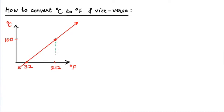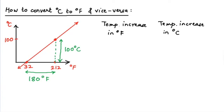If I complete the right angle triangle, the height of the triangle in degrees Celsius units is 100 degrees Celsius, and the base in degrees Fahrenheit is 212 minus 32, which is 180 degrees Fahrenheit. From the diagram, when the temperature rises from 32 to 212 degrees Fahrenheit — a rise of 180°F — the corresponding temperature increase in Celsius is 100 degrees Celsius. Because this is a straight line, the rate at which the Celsius and Fahrenheit temperatures rise bears a constant relation.